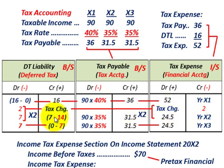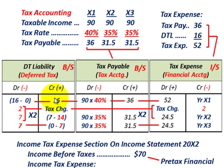For year X2, we carry over $14,000 into deferred tax liability as the beginning amount. The ending DTL is $7,000, so we reduce deferred tax liability by $7,000. Same for year X3 — beginning $7,000, ending zero, so we reduce deferred tax liability by $7,000 again. Over those three years, we started with $16,000, reduced by $2,000 for the tax rate change, then reversed the remaining balance over the next two years, ending with a zero balance.